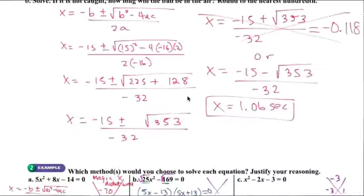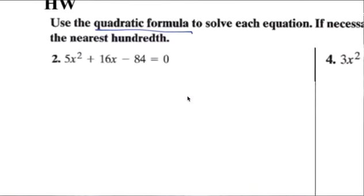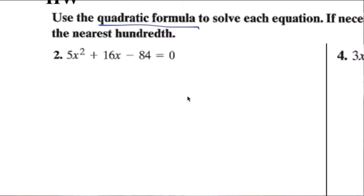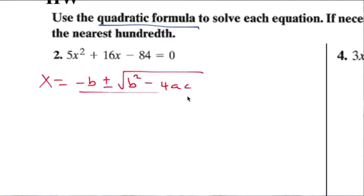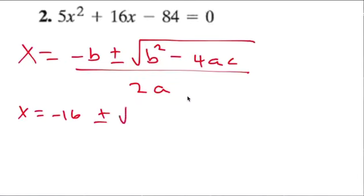The book only gives the answer in decimal, so what you do is for each one you put x equals negative b plus or minus the square root of b squared minus 4ac, all over 2a. So x equals negative b, which is negative 16, plus or minus the square root...